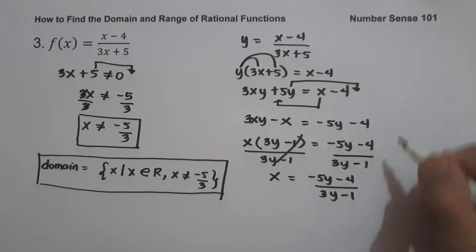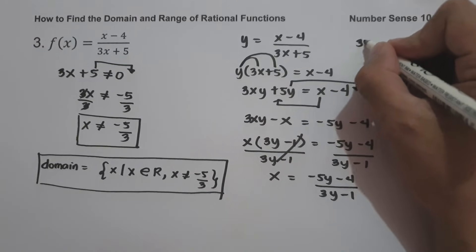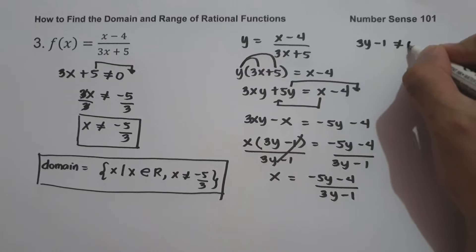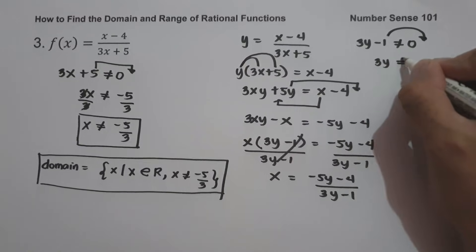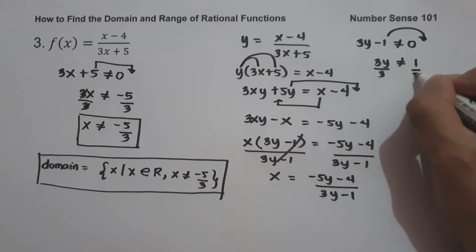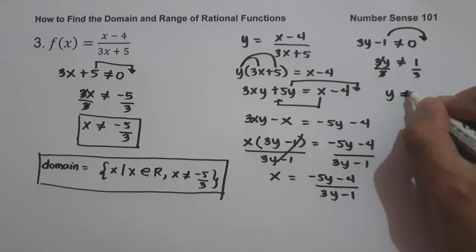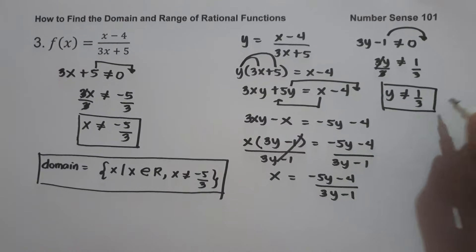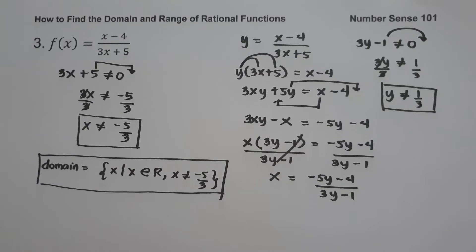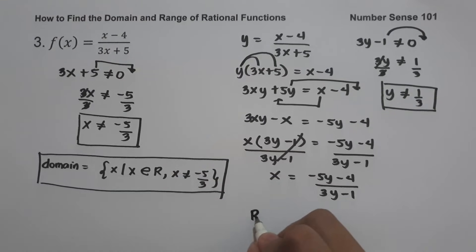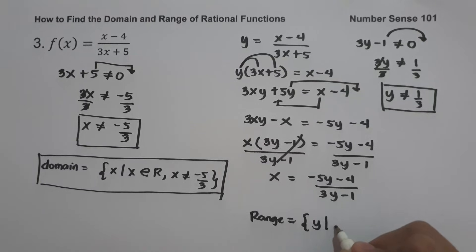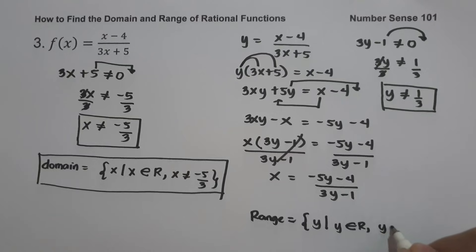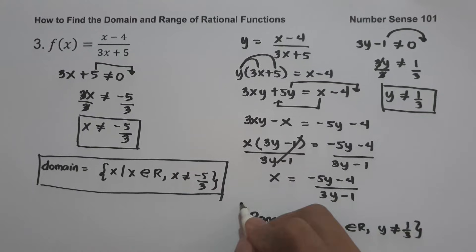To find the range, equate the denominator not equal to 0: 3y - 1 ≠ 0, giving 3y ≠ 1, so y not equal to 1/3. So the range of f(x) is the set of all real numbers except 1/3. In set builder notation: range is the set of all values of y such that y is the set of all real numbers except 1/3.